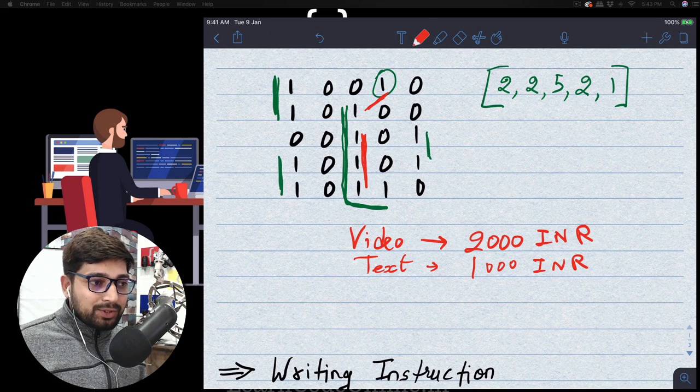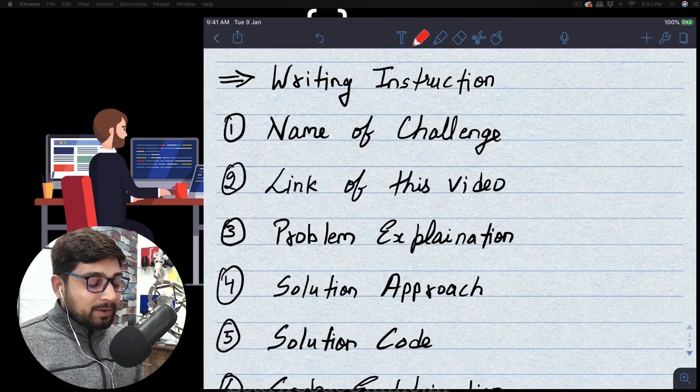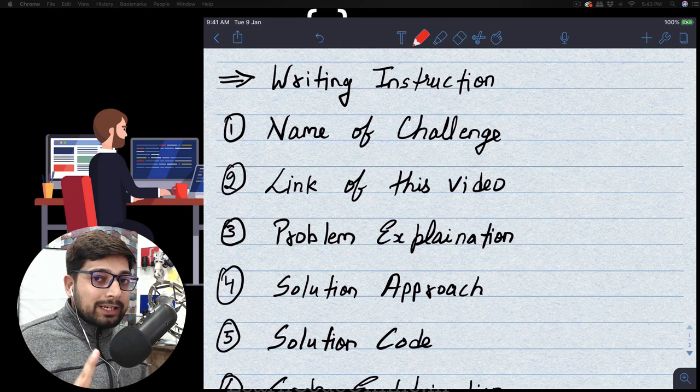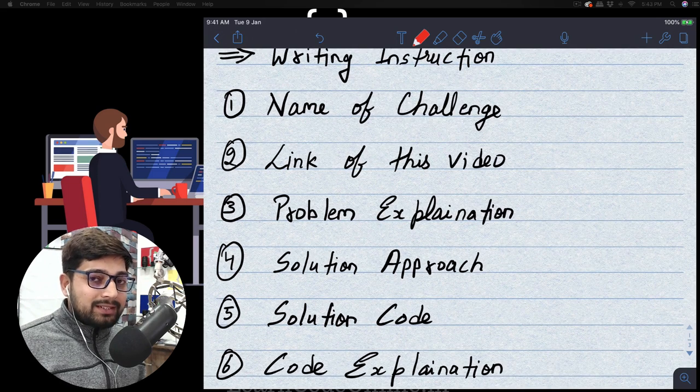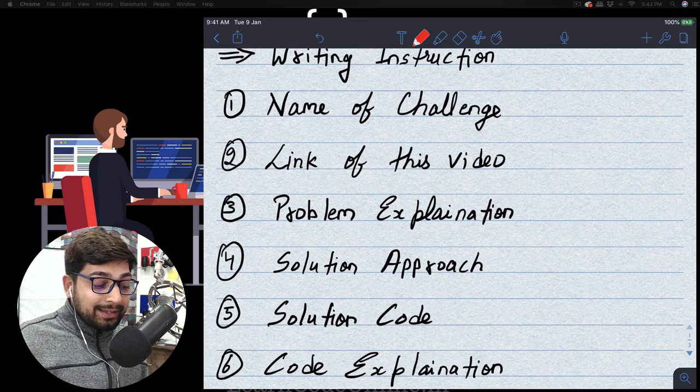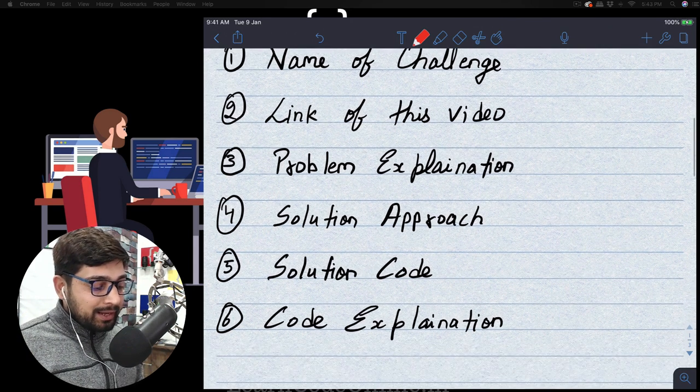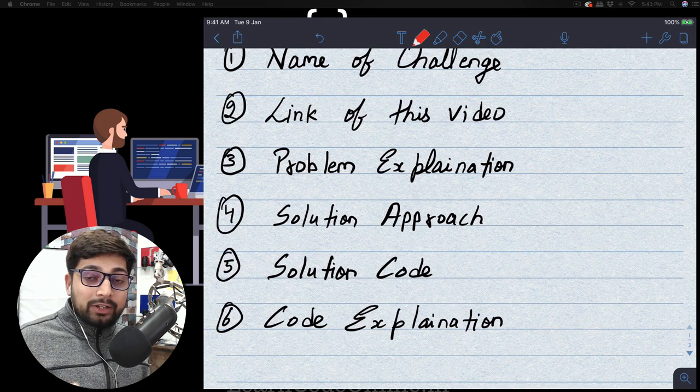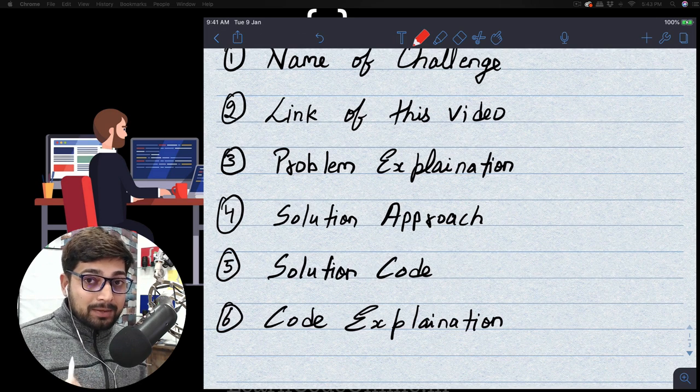In case you are posting me a text solution or a video solution, here are the lines of instruction that you have to follow. First and foremost, make sure you mention the name of the challenge: Classic Cookie Challenge. The second step is mention the link of this particular video so that I can refer this to other audience who want to understand what exactly things are going on. In step number three, problem explanation. I know I have explained this problem, but I want you to explain it again in your own words. Everybody has different way of explaining things. It is always appreciated by interviewers also.